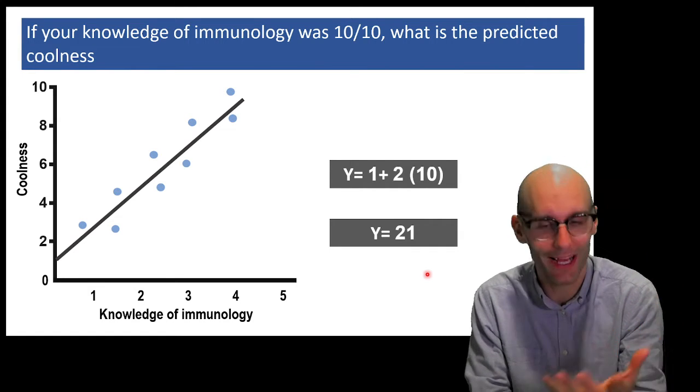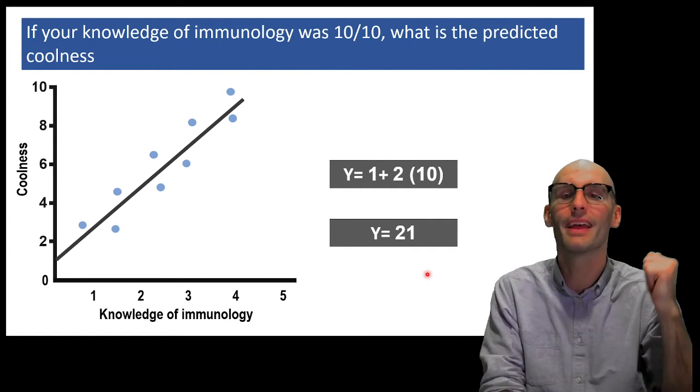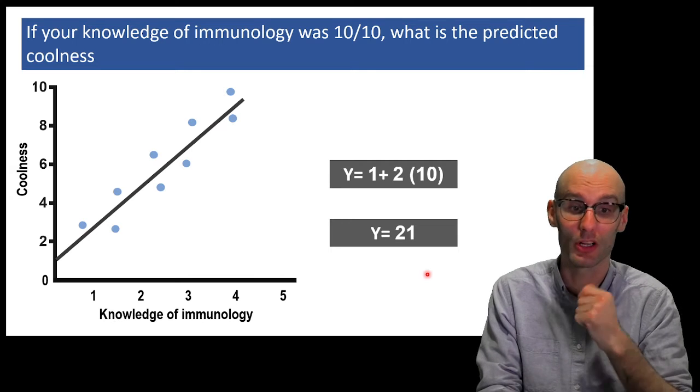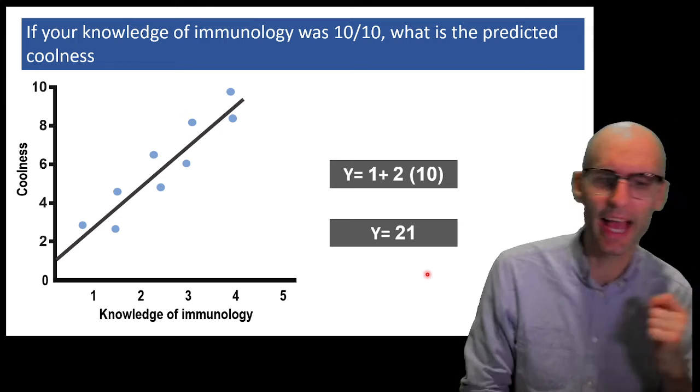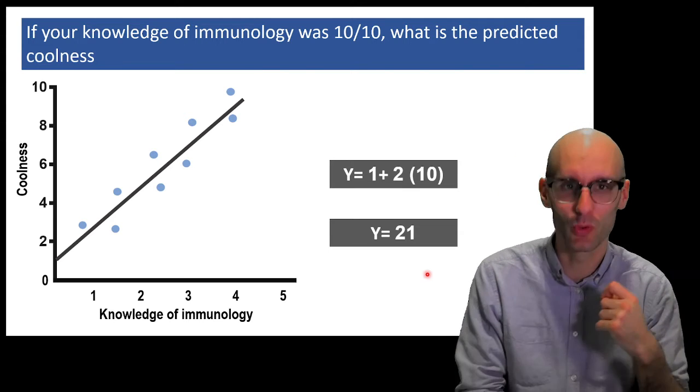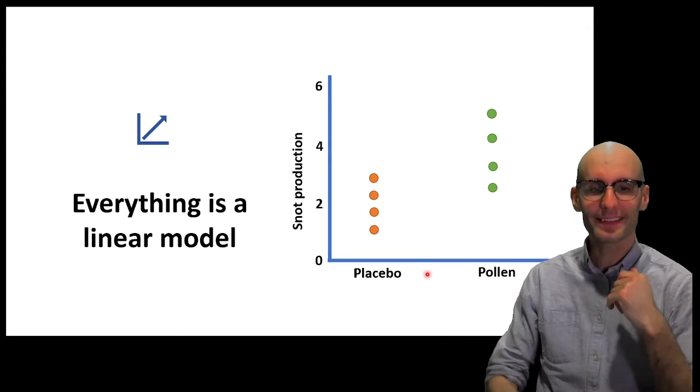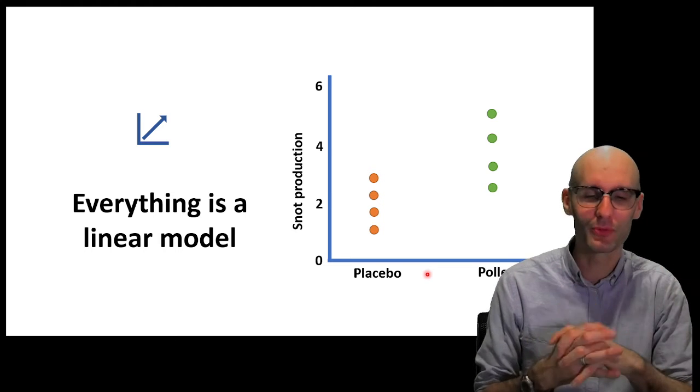So what if your knowledge of immunology was 10 out of 10? What is the predicted coolness? So you plug that back into the formula. This time I'm just showing you the statistician's way of doing it. y equals 1 plus 2 times 10. And we end up with 21. So your coolness level is 21 out of 10 if you have 10 out of 10 immunology knowledge. So this is a predicted value for if you came across someone with 10 out of 10 immunology knowledge, you could predict their coolness.